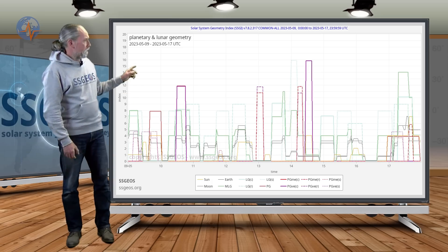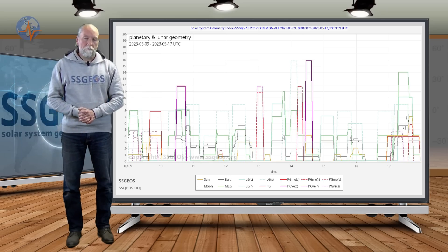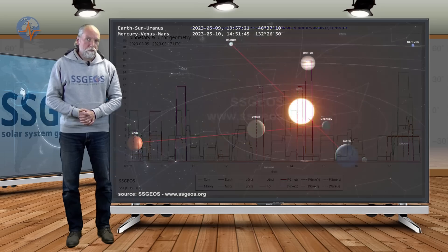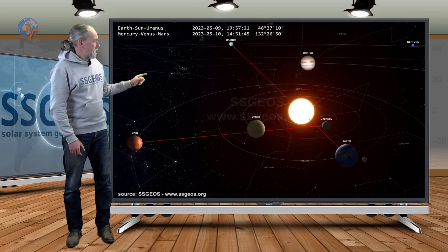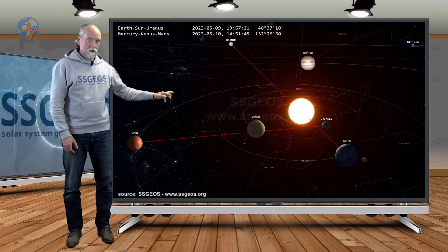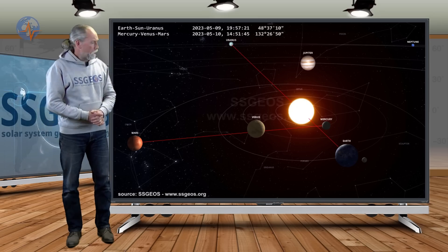If you look further on the SRGGI graph, we have quite some critical planetary geometry coming up this week. Today and tomorrow, two planetary conjunctions. If we look at the solar system, we see Earth, Sun, and Uranus in conjunction later today, followed by a critical planetary conjunction tomorrow: Mercury, Venus, and Mars.